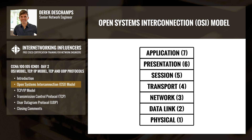The Open Systems Interconnection, or OSI model, is a 7-layer reference model that is used to conceptualize how information is carried from one software application on one host, through the network, to the software application on another host.